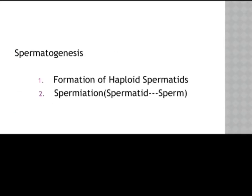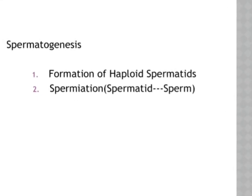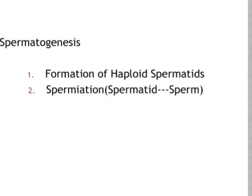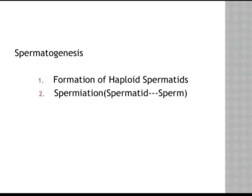We can divide the entire process of spermatogenesis into two different stages: the first is the formation of haploid spermatids, and the second stage is called spermiogenesis — the conversion of spermatids into mature sperms. These are the two different processes taking place during spermatogenesis.